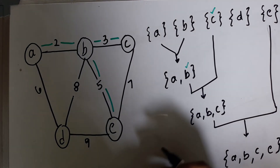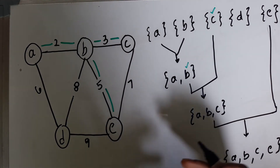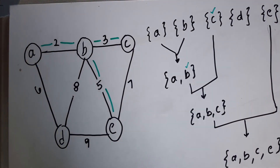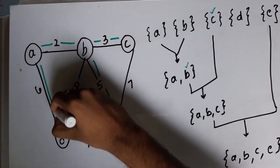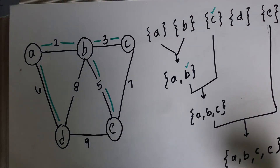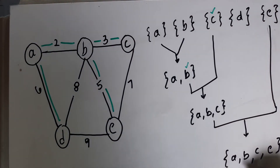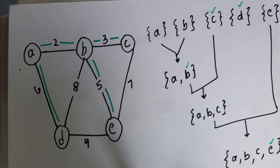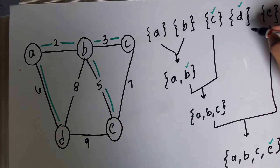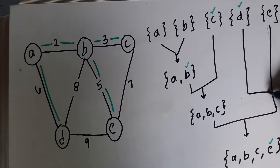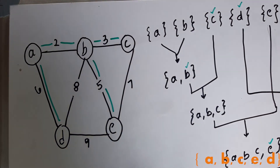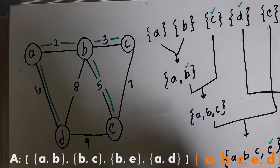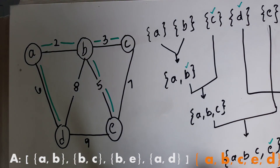We discard that and move to the next minimum edge, which is A and D. We check if A and D belong to the same set. A's representative is E and D's representative is D itself — they are not the same, so we merge them and add this edge to our set.